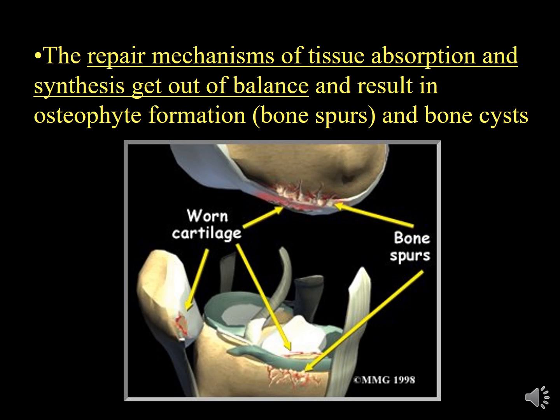The repair mechanism of tissue absorption becomes out of balance, resulting in osteophyte formation. The normal articular cartilage is under a continuous process of regeneration and degeneration. With aging, the cartilage ages too: cartilage regeneration decreases and degeneration increases, so the net result is destruction of the cartilage. There is an imbalance between cartilage formation and cartilage destruction — this is the pathology of Osteoarthritis.